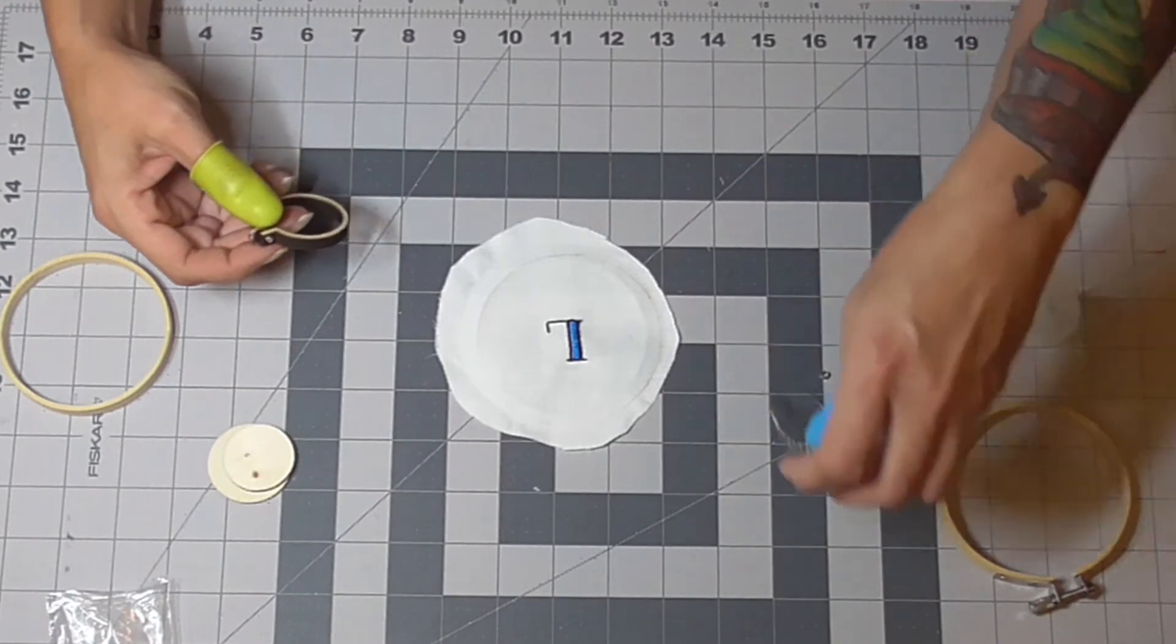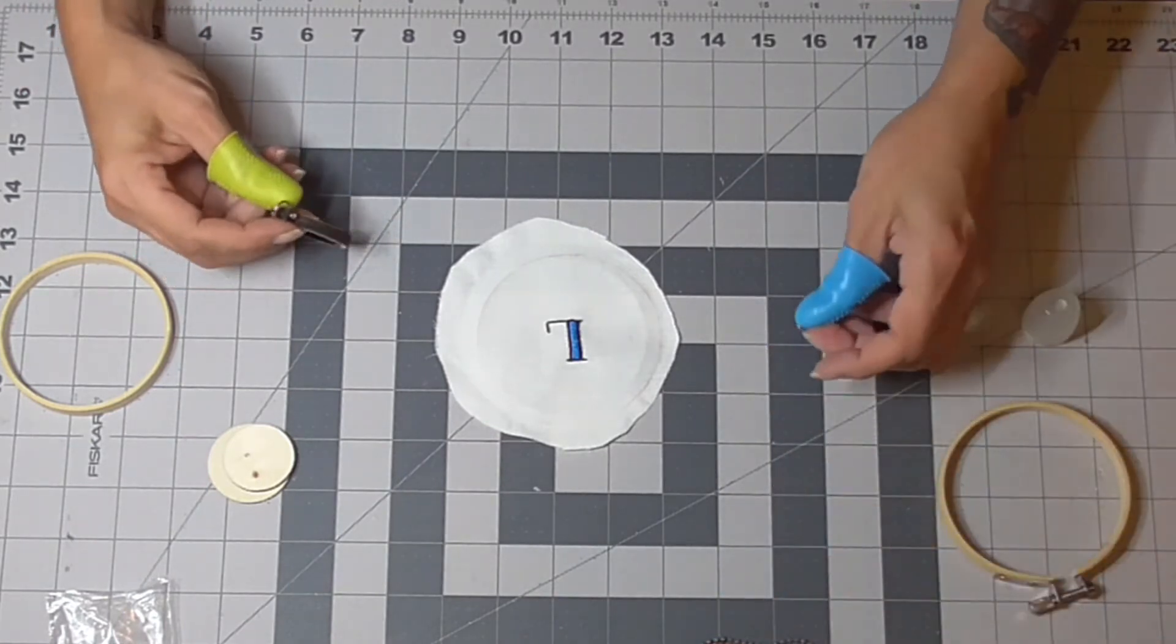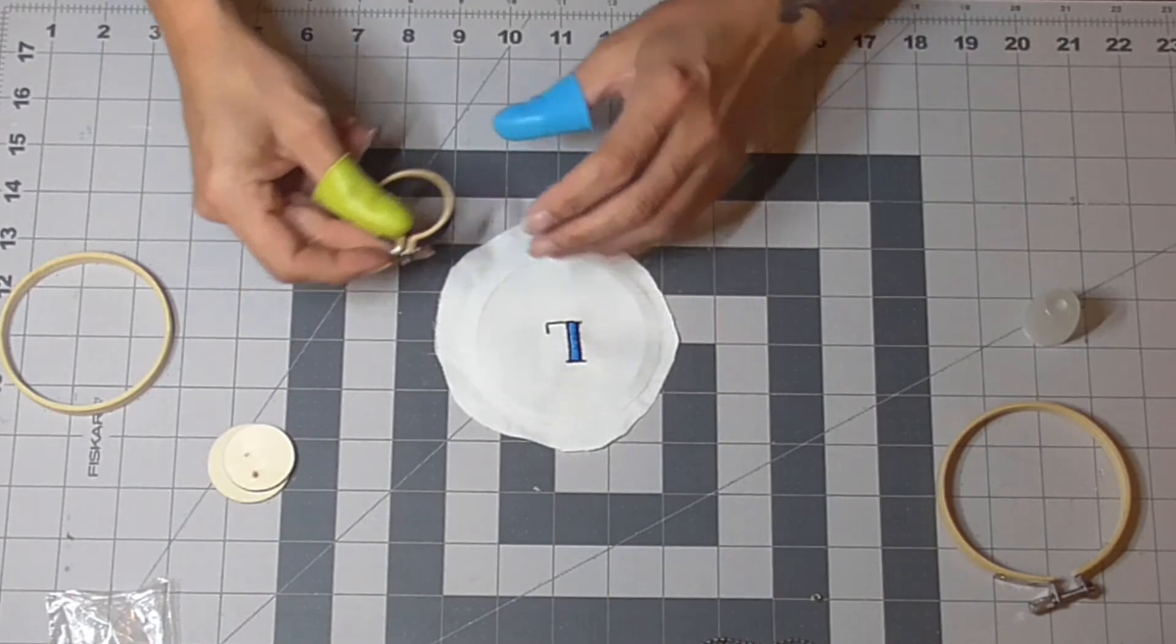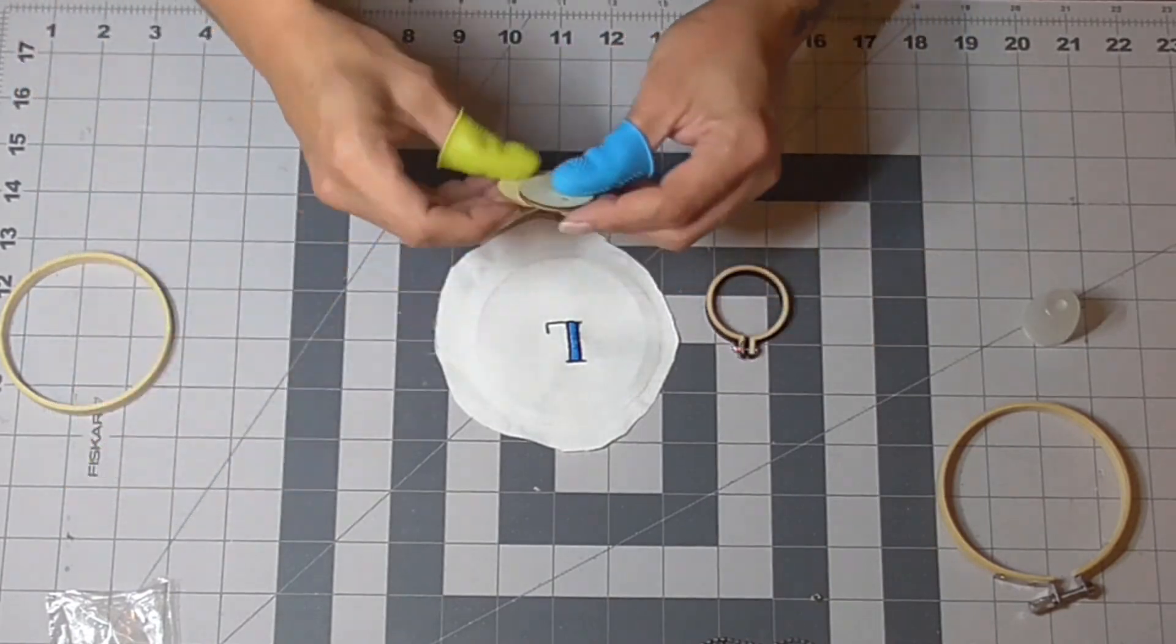All right, this one works a little bit different than the oval frame because there are two pieces on here.